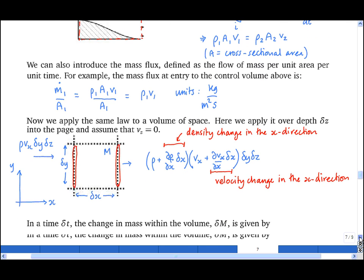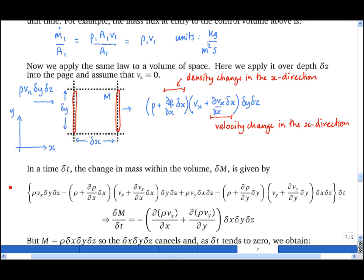Then I repeat that for the y direction as well. And so if there is a little change in mass inside the control volume, it is given by the flow in, in the x direction, plus the flow in, in the y direction, minus the flow out in the x direction, minus the flow out in the y direction.